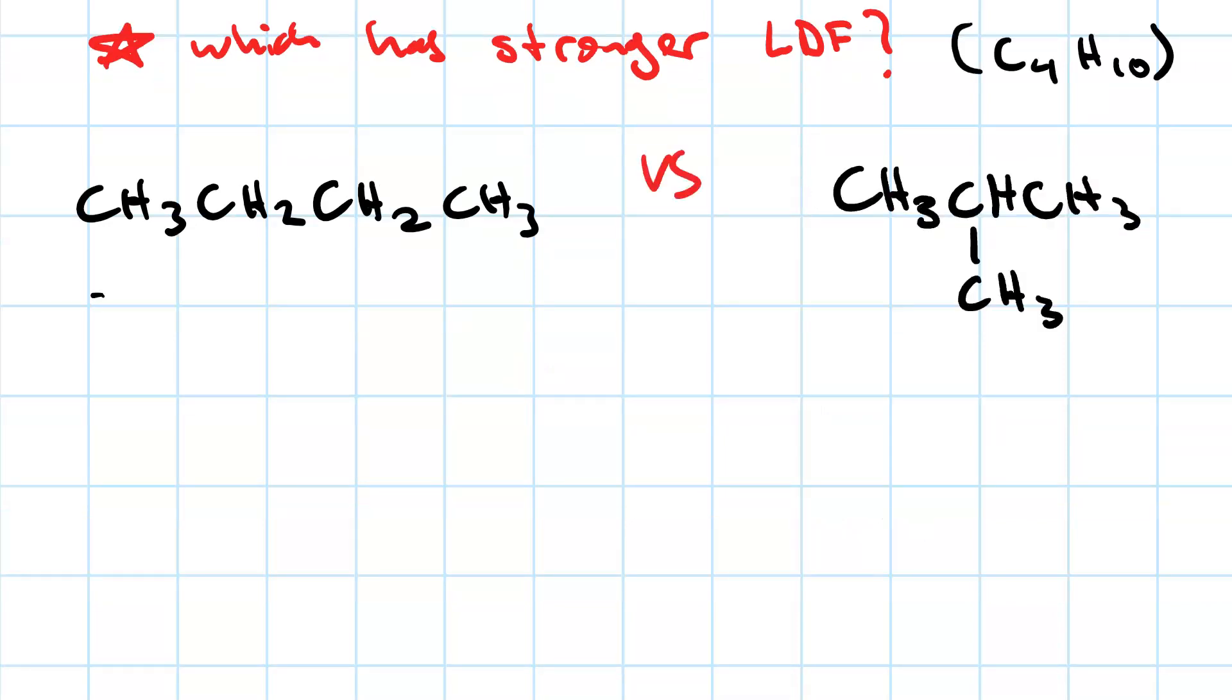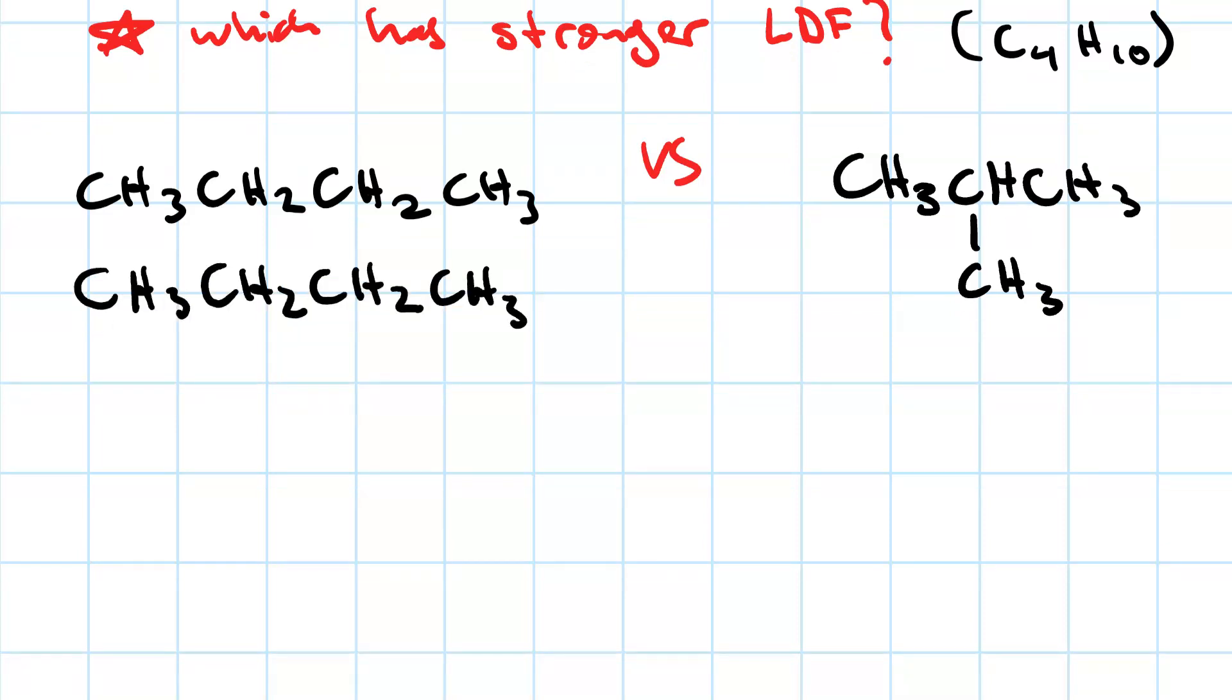If we bring the straight chain compound in contact with another of its kind, they can have a whole lot more surface area in contact. And really, the whole side of the molecule can be interacting with the whole side of the other molecule.